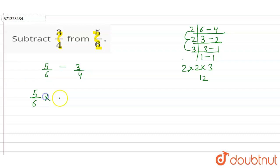6, we have to multiply it with 2. We have to multiply 5 by 6 with 2, so 5 into 2 is 10, 6 into 2 is 12. Similarly to make